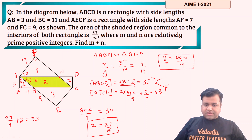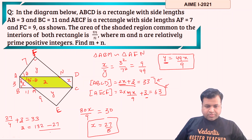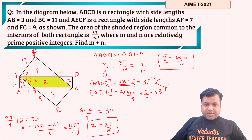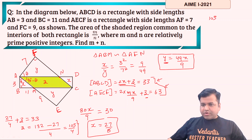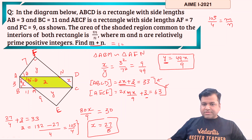Substituting x = 27/8 into the first equation: 2x + z = 33, so 27/4 + z = 33, giving z = (132 − 27)/4 = 105/4. This is the value of the shaded region. The area of the shaded region common to the interiors of both rectangles is m/n = 105/4, and we are asked to find m + n, which is simply 105 + 4 = 109.